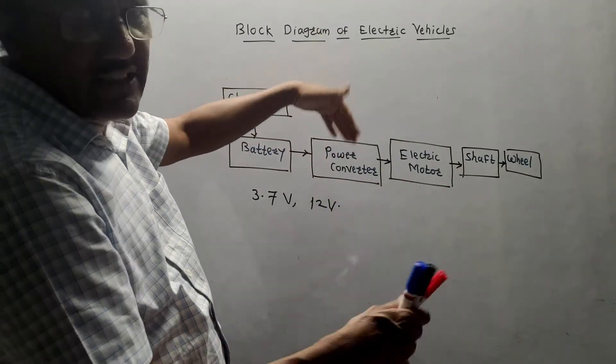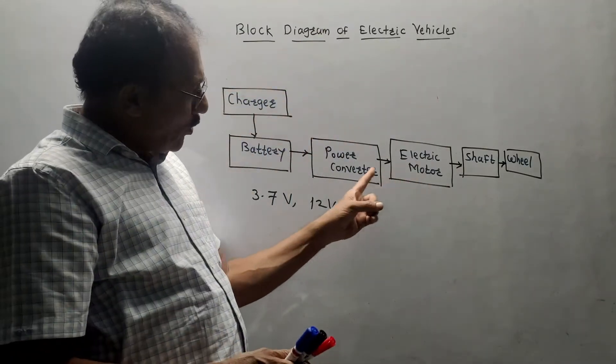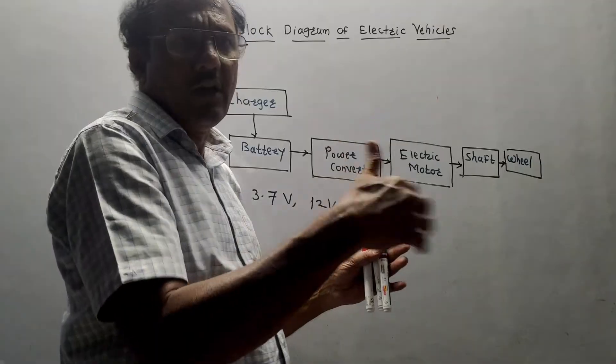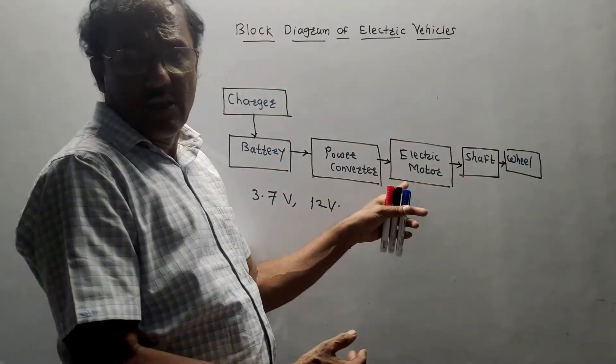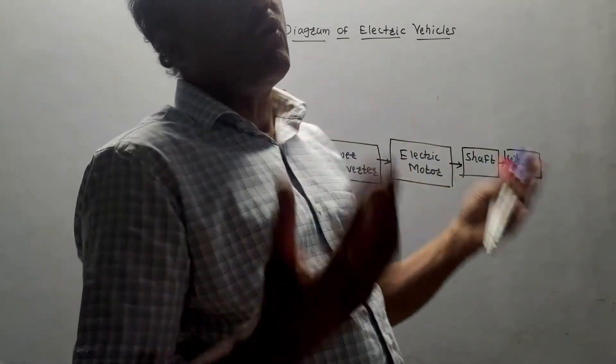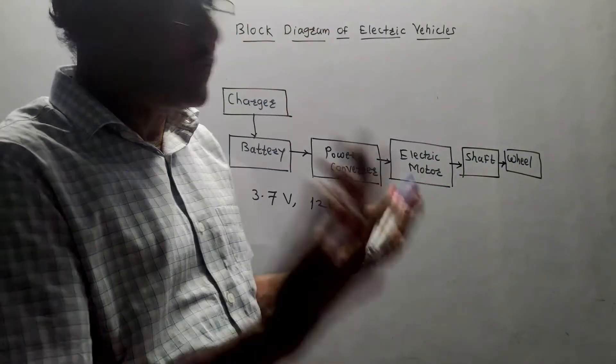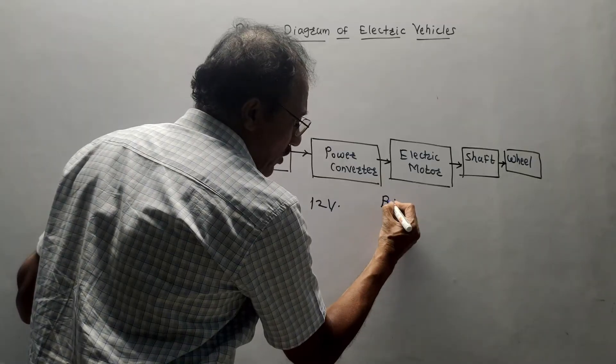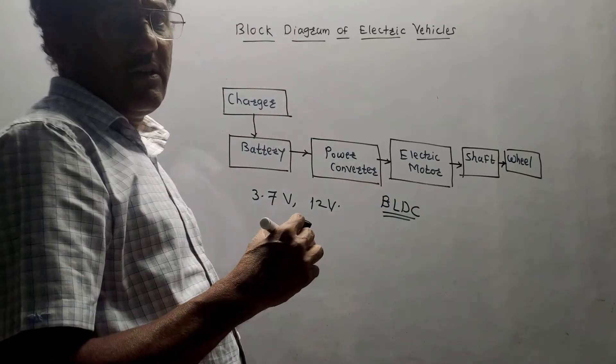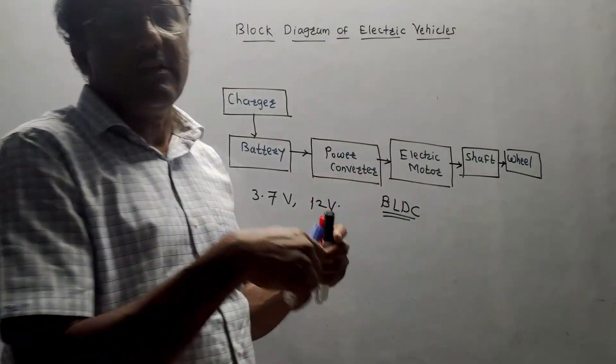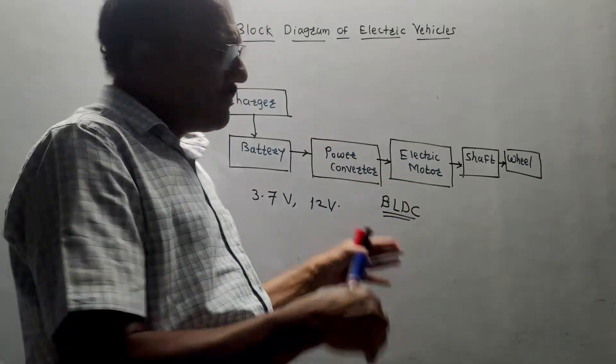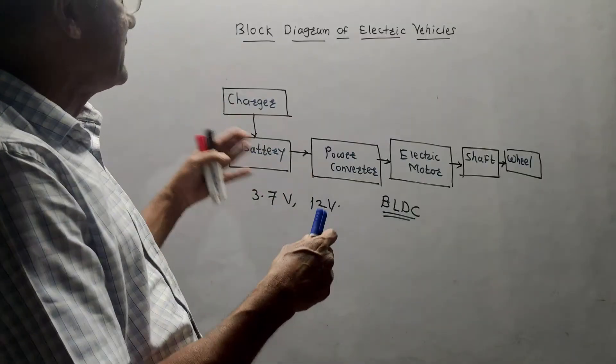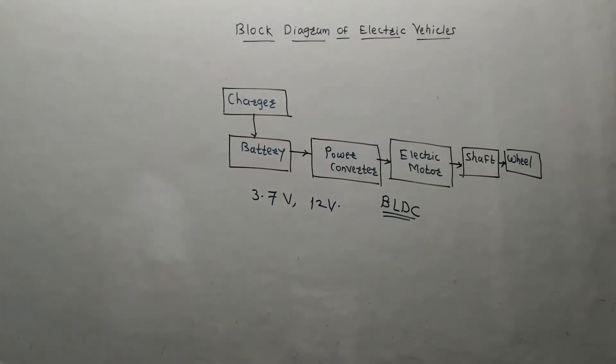Then, power converters are used as the name indicates to make the conversion of power. Then, this output is given to the electric motor. The main function of electric motor is to convert the electrical energy into the mechanical motion and accordingly, shaft and wheels are used. Depending on the requirement or depending on the type of vehicle, like if it is two-wheeler, three-wheeler or four-wheeler, depending on that, a particular electric motor is selected. Usually, BLDC motor is preferred because it is having, compared to other motors, less losses and torque is more. Nowadays, also, BLDC motors are used for wipers and any other applications as far as the car accessories are concerned. So, this is the simplest block diagram of electrical vehicles.